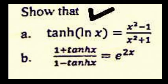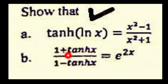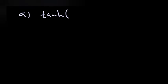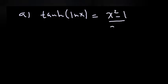What is it? It shows that tanh(ln x) is equal to (x squared minus 1) over (x squared plus 1), and also (1 plus tanh x) over (1 minus tanh x) is equal to e to the power of 2x. Let's prove these.